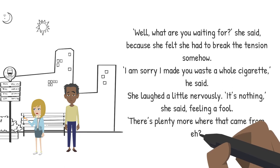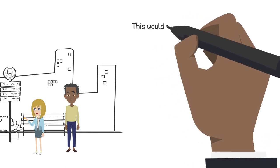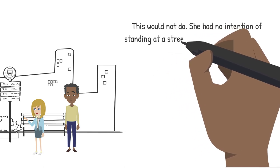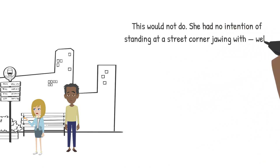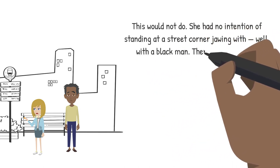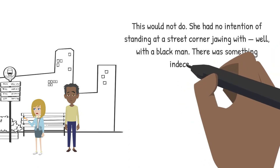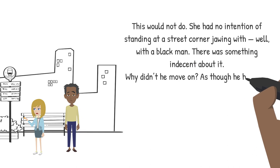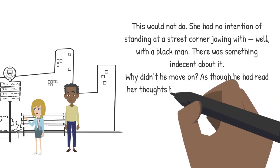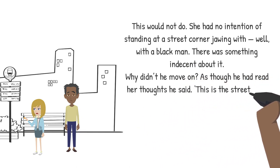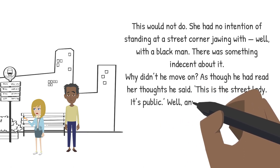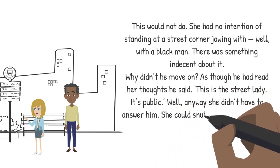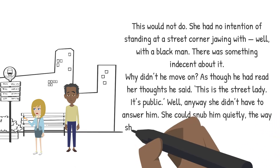This would not do. She had no intention of standing at a street corner jawing with a black man. There was something indecent about it. Why didn't he move on? As though he had read her thoughts, he said, 'It's the street, lady. It's public.' Well, anyway, she didn't have to answer him. She could snub him quietly the way she should have properly done in the first place.